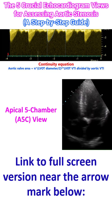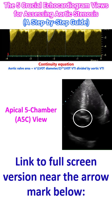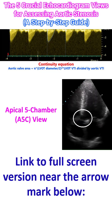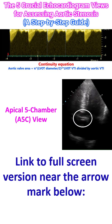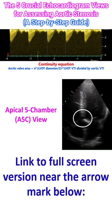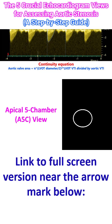The apical 5-chamber view is the primary view for hemodynamic assessment because the ultrasound beam is usually most parallel to the flow of blood leaving the heart. Use pulsed wave Doppler to get the LVOT VTI (velocity time integral) in the left ventricular outflow tract region, and continuous wave Doppler to get the aortic valve VTI. The DVI (Doppler velocity index) is a crucial dimensionless ratio between the two values. Ensure the cursor is perfectly parallel.